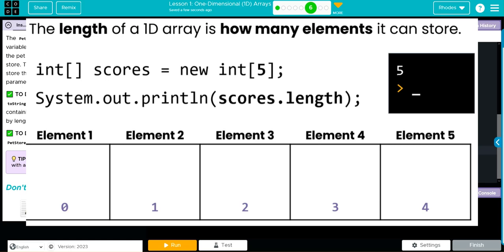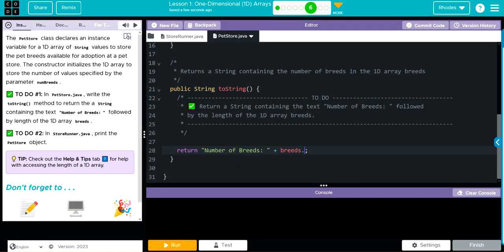We have a special command in Java which gives us the length of our 1D array. When we create it, it's immutable, meaning we can't change it. If we have five spots, that's all the spots that can be in that array. Because of that, it's very helpful to know the size. We use the dot modifier and call the length command, so breeds.length will return the length of the 1D array breeds, which should be 16.